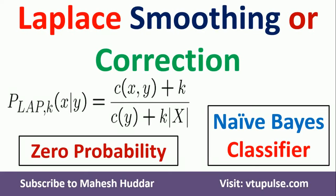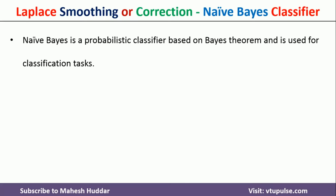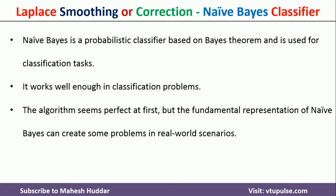Welcome back. In this video, I will discuss how to use Laplace smoothing or correction to remove the zero probability problem in the Naive Bayes classifier with a simple numerical example. To understand what is the zero probability problem and how to remove it with the help of Laplace smoothing, we will consider one simple example here.